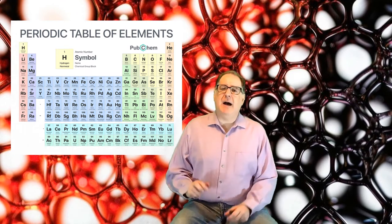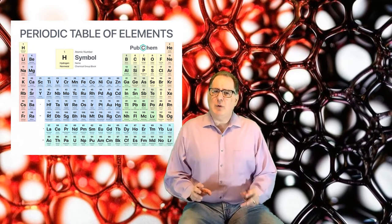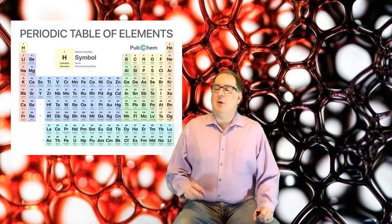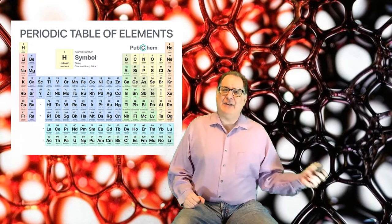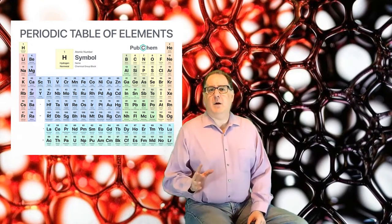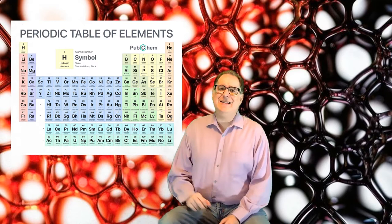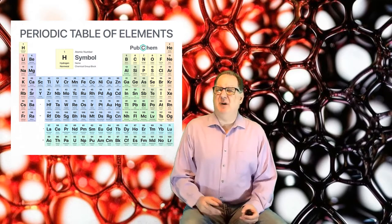Now, each box on the periodic table represents a different element, from hydrogen to oganesson. There are a total of 118 different elements. But what is an element?